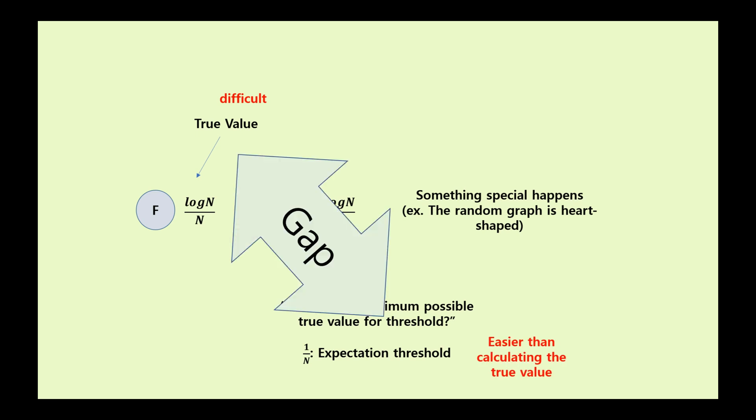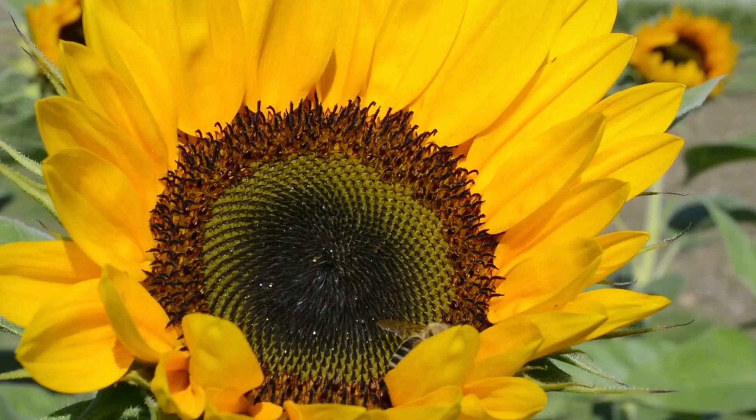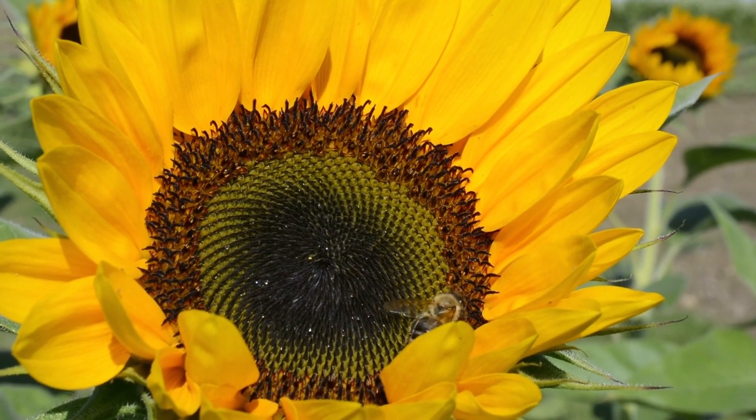The conjecture is about the gap between the true value and the expectation threshold. The gap between the true value and the expectation threshold is smaller than the logarithmic factor.